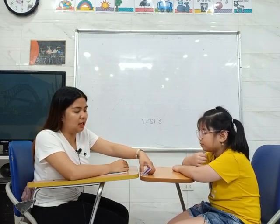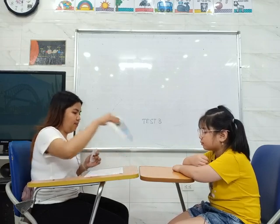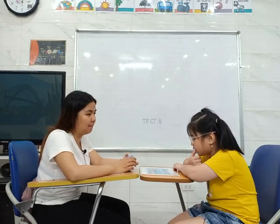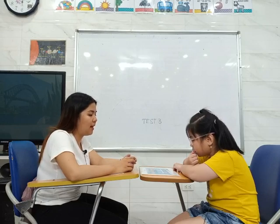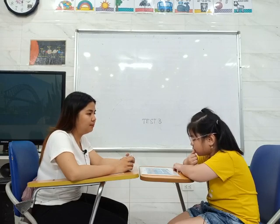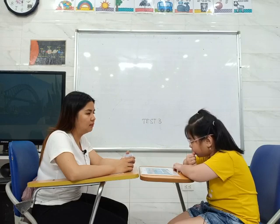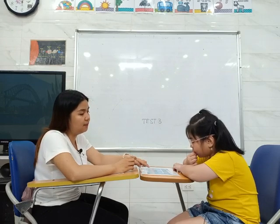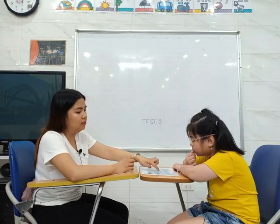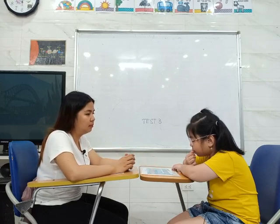Now let's identify some objects in a scene picture. How many people do you see? I see three people. Where are they? They are in the garden. Okay, in the garden and by the pool.